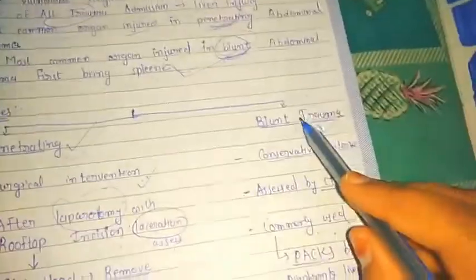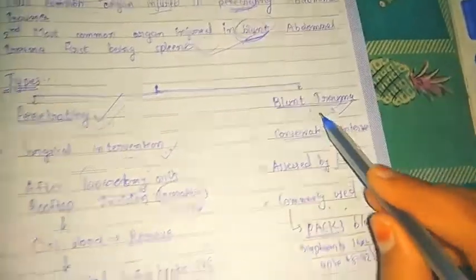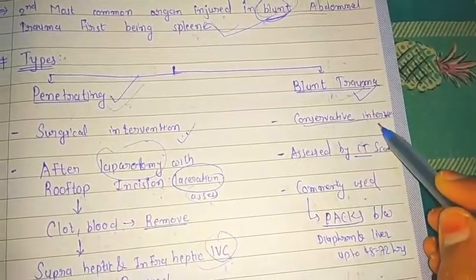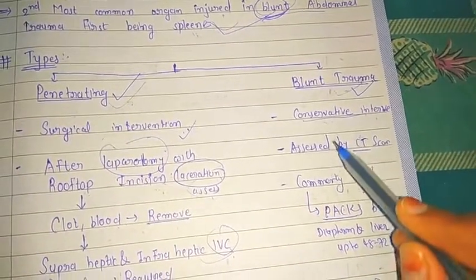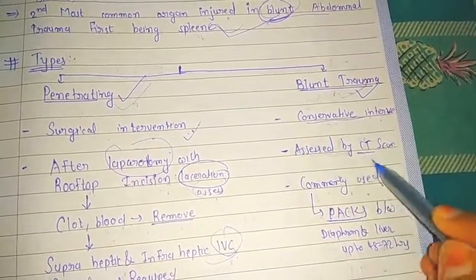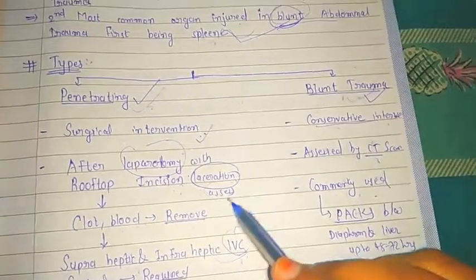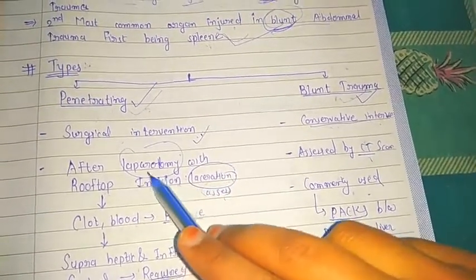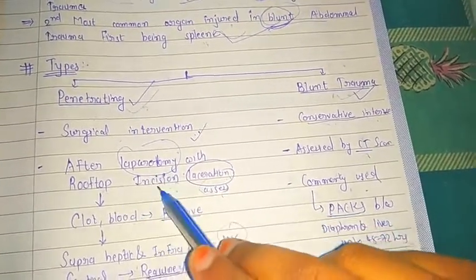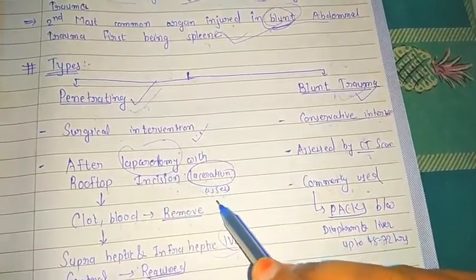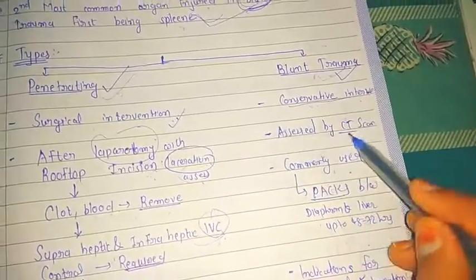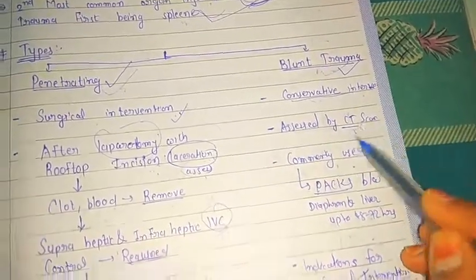For blunt trauma, conservative intervention is used. First, it is assessed by CT scan. In penetrating injury, laceration is assessed by laparotomy with rooftop incision, whereas in blunt trauma it is assessed by CT scan.